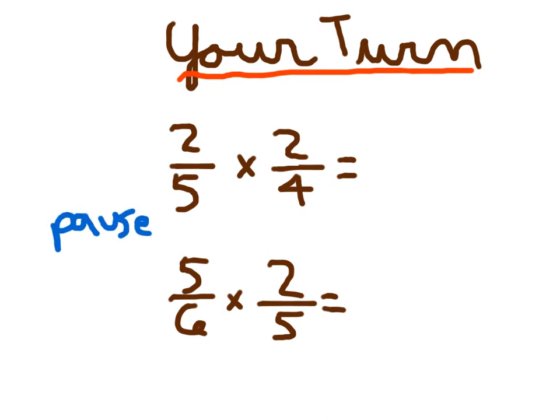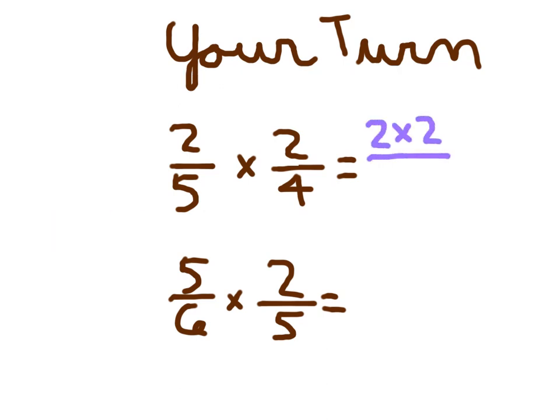For that first problem, we would multiply 2 times 2. And we would multiply 5 times 4 for the denominator. That's 4 twentieths. And if you simplified that, what did you simplify it to? Did you have 1 fifth as your answer there? I hope so. Give yourself a pat on the back.